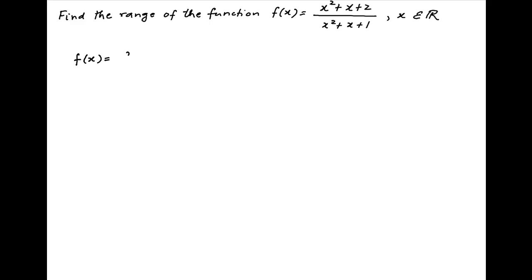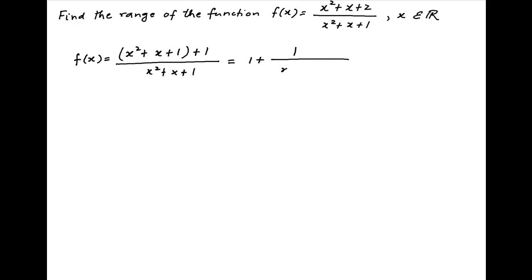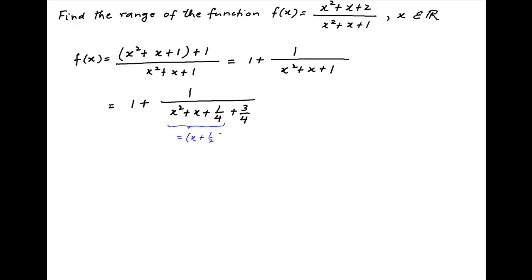The given function f(x) can be written as (x² + x + 1 + 1) in the numerator divided by (x² + x + 1), which simplifies to 1 plus 1/(x² + x + 1). This is equal to 1 plus 1/(x² + x + 1/4 + 3/4). The first three terms in the denominator can be expressed as (x + 1/2)², and therefore f(x) = 1 + 1/((x + 1/2)² + 3/4).